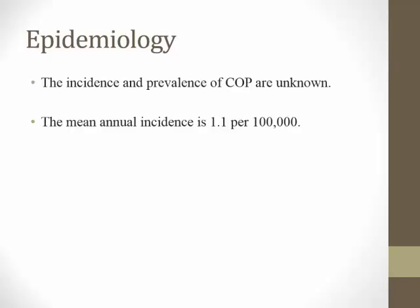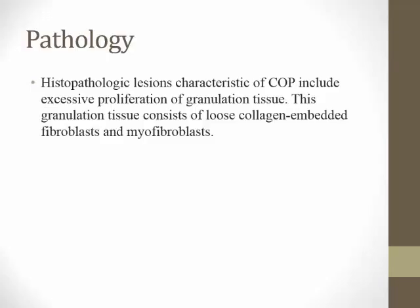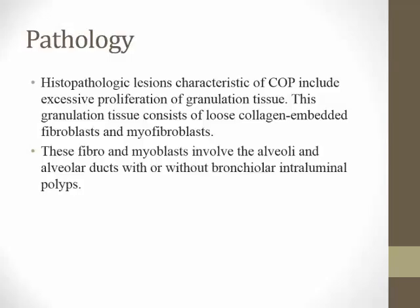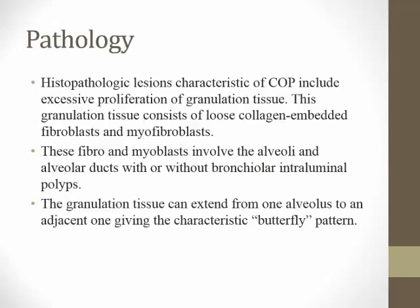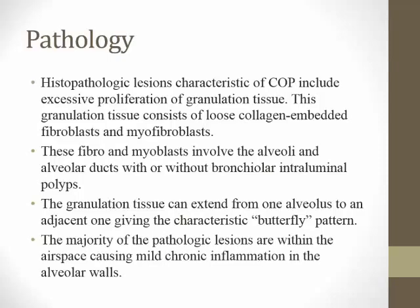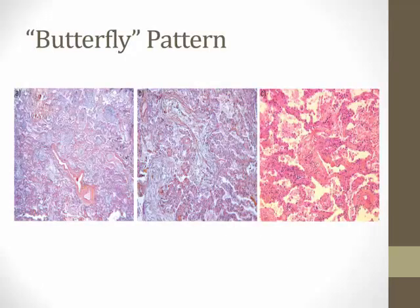The mean annual incidence of COP is 1.2 per 100,000 people. Pathology is important in COP because it is part of the diagnosis. Histological slides show excessive proliferation of connective tissue consisting of loose collagen with fibroblasts and myofibroblasts. Those fibroblasts are within the alveoli and can be with or without intraluminal polyps. Granulation tissue can extend from one alveolus to another, creating what is called the butterfly pattern. The majority of pathological lesions are within the airspace with chronic inflammation.